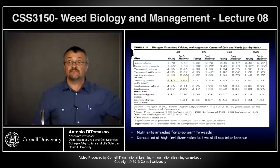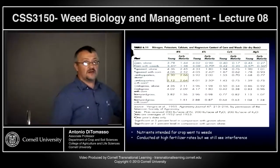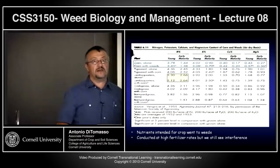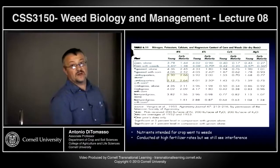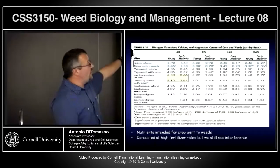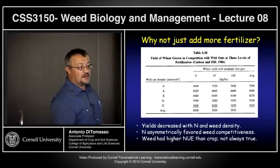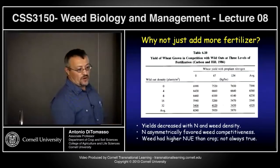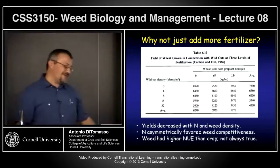These weeds can take up nutrients in large amounts, and even when competing with corn plants they're by far more competitive. So here's the question: you think, I want to increase my yields, let's just fertilize — let's just pump the nutrients in there. Here's an experiment where they looked at wheat grown with wild oats (Avena fatua) at three levels of fertilization. This is a field-type experiment with wheat yield at pre-plant nitrogen of 0, 67, and 134 kg/ha.